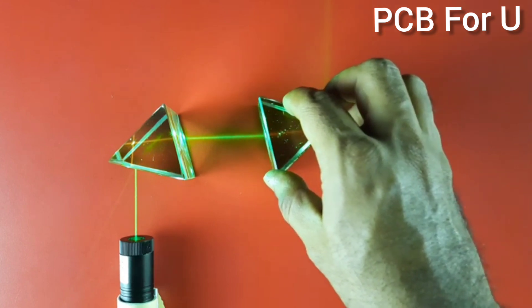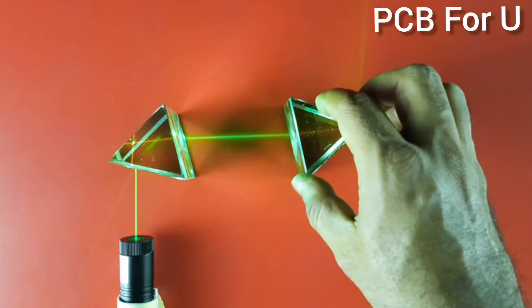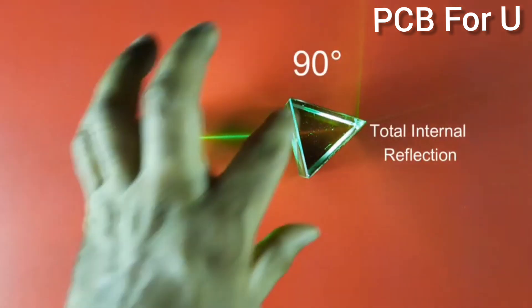So with three prisms, we can get each and every prism can give 90 degree total reflection.